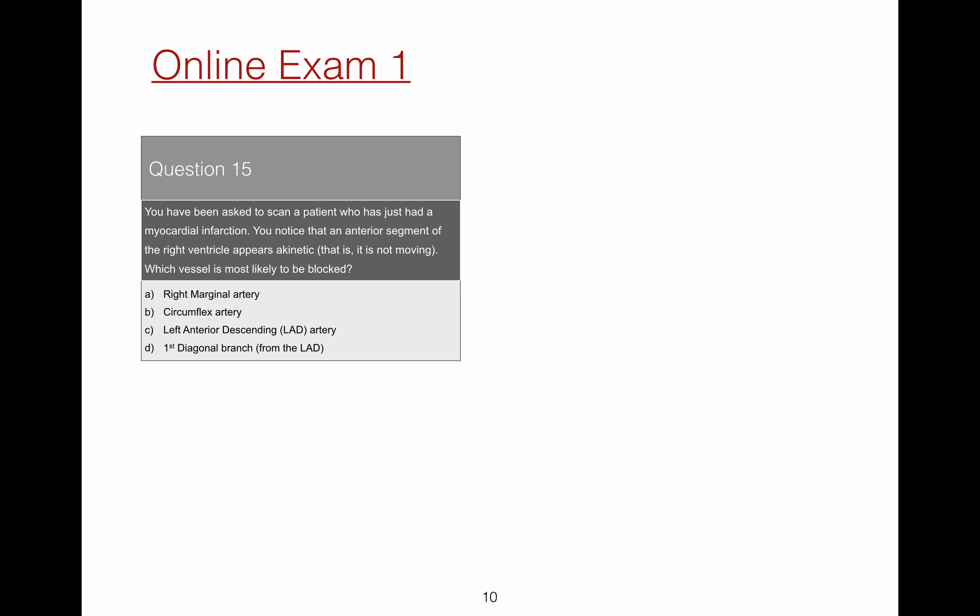Question 15. You have been asked to scan a patient who has just had a myocardial infarction. You notice that an anterior segment of the right ventricle appears akinetic. That is, it is not moving. Which vessel is most likely to be blocked? Well, while coronary artery supply can vary, the most likely answer is the right marginal artery.